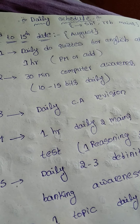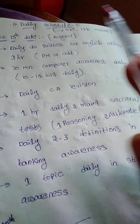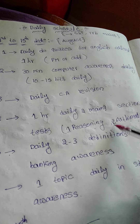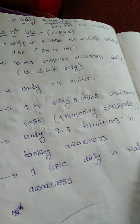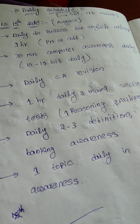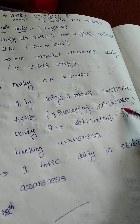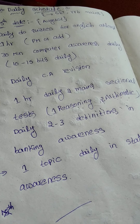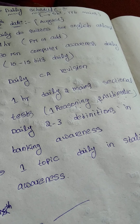The fourth step is two mains sectional tests daily — one for reasoning and one for arithmetic. English is already covered through the daily quizzes in step one, which is why it is skipped in this fourth step. For sectional tests, I follow only Practice Mock and Oliveboard first.